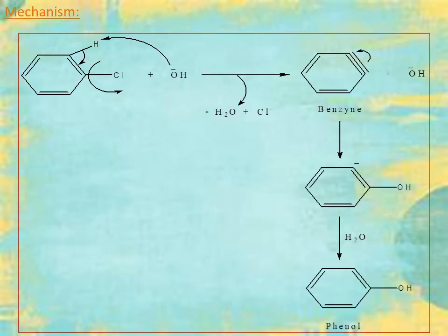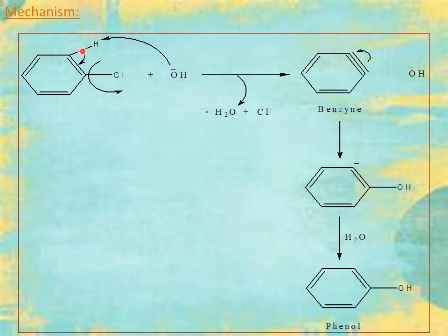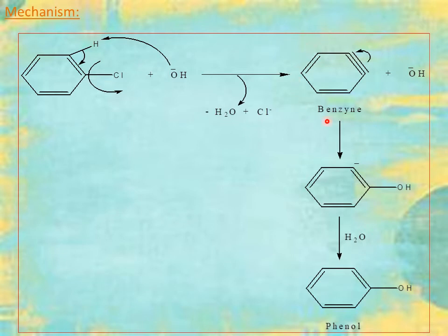This is the mechanism involved in the Dow process — a very important mechanism. First, there is a loss of Cl⁻ along with its bond. The proton on the adjacent carbon atom donates its bond between carbon and carbon, and the C=C double bond is converted into a C≡C triple bond. This ion is named benzyne — an unstable intermediate generated in the Dow process. The driving force for this reaction is the OH⁻ ions liberated from NaOH.